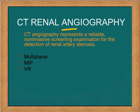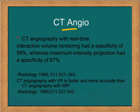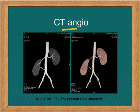CT angiography represents a reliable non-invasive screening examination for the detection of renal artery stenosis. We can perform MIP, multi-planar reconstruction, and volume rendering — all three are necessary to reach a conclusion. CT angiography today is found to be accurate in close to 99% of cases, and this is the way to evaluate renal artery stenosis if the renal function is normal. These pictures from a 64-slice CT demonstrate the outstanding image quality achievable.